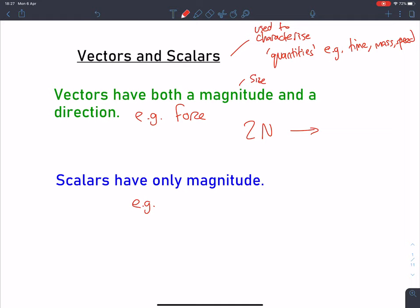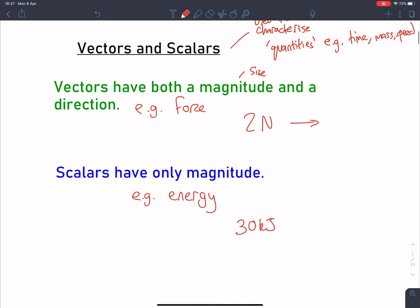Scalars have only magnitude, so an example of this would be energy. We can say I have four joules of potential energy, or 30 kilojoules of chemical potential energy. But if I think about chemical energy, it makes no sense to talk about up, down, left, right, north, south, east, west. There's no direction there, only the absolute size. So I have 30 kilojoules of energy without a direction.